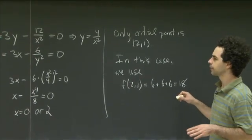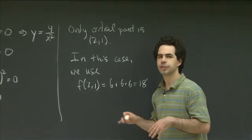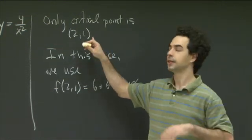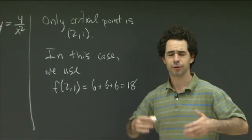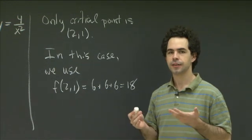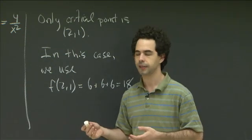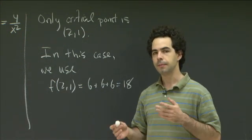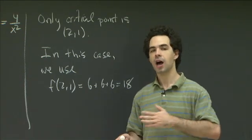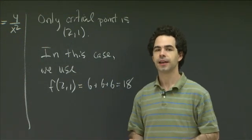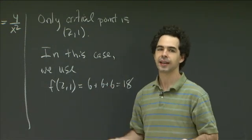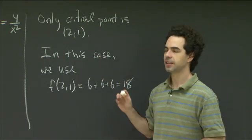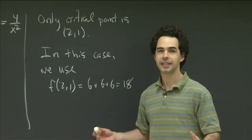One thing you might notice is we didn't use the second derivative test here, and we concluded it was a global minimum without it. The second derivative test tells you whether something is a local minimum, local maximum, or saddle point. But being a local minimum isn't enough to guarantee a global minimum — on the boundary or as x or y goes to infinity, the function value could get smaller without bound. In this case we showed the function gets larger and larger without bound in those regions, which confirmed that the critical point really is the global minimum. The second derivative test alone isn't enough; you need that extra analysis.